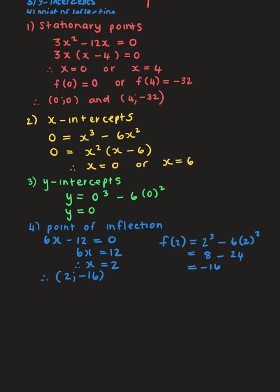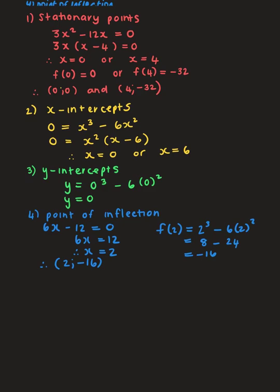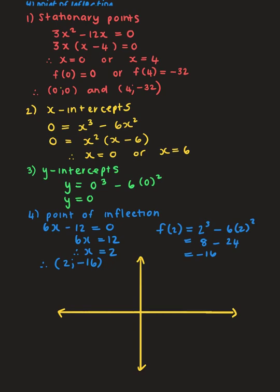Now we draw the function. Your graph doesn't have to be a work of art or drawn to scale — what's important is the shape. From our orientation review, with 'a' positive and two turning points, the graph increases to a local maximum, decreases through the point of inflection, reaches the local minimum, and increases again.